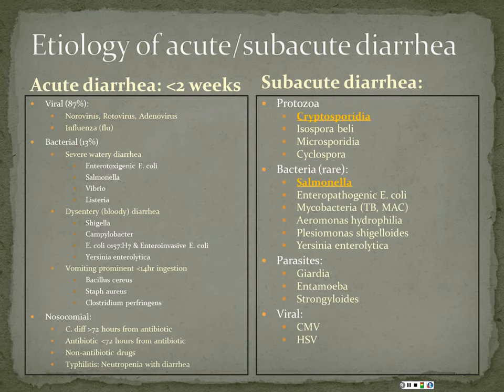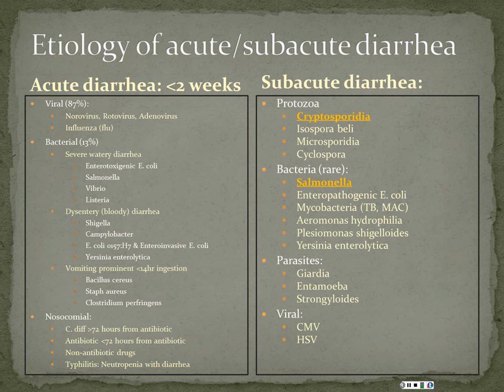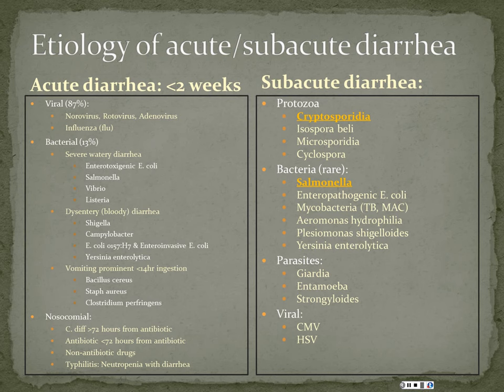The etiologies of acute community-acquired or subacute diarrhea: viral etiologies are most common — norovirus, rotavirus, adenovirus, and flu. For bacterial infections, which account for a smaller percentage, we subdivide into three categories: severe watery diarrhea, dysentery (bloody diarrhea), and vomiting-predominant diarrhea. Bloody diarrhea is usually caused by Shigella, Campylobacter, enteroinvasive E. coli, O157:H7 hemorrhagic E. coli, Neisseria, Yersinia, or occasionally Salmonella.